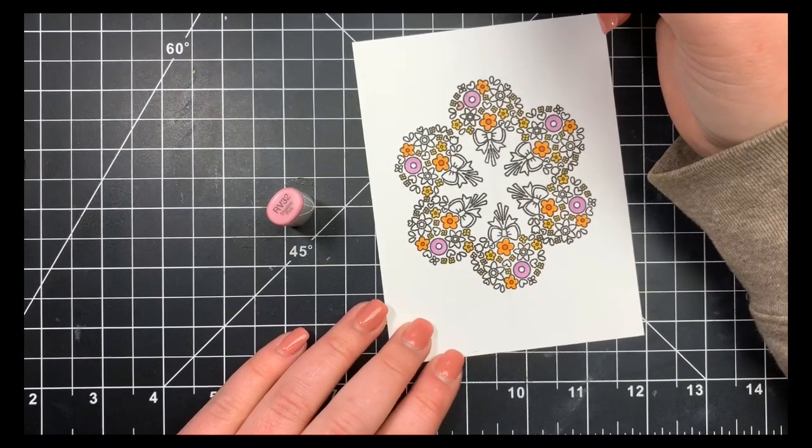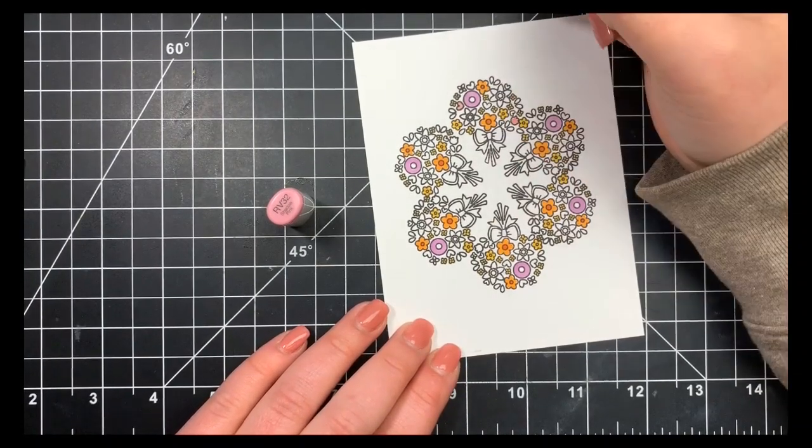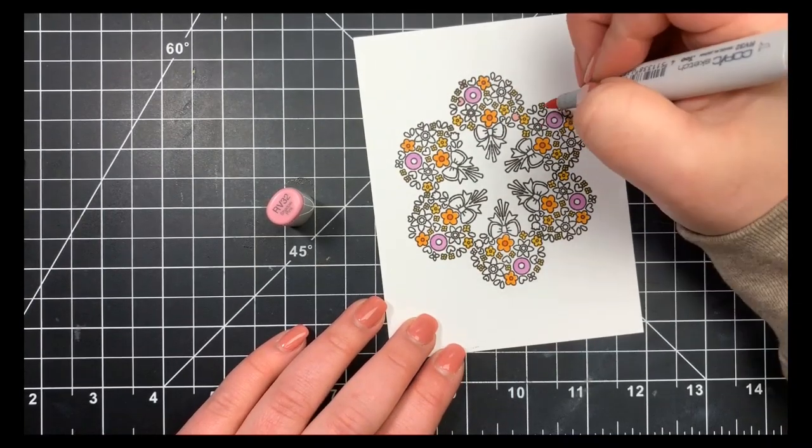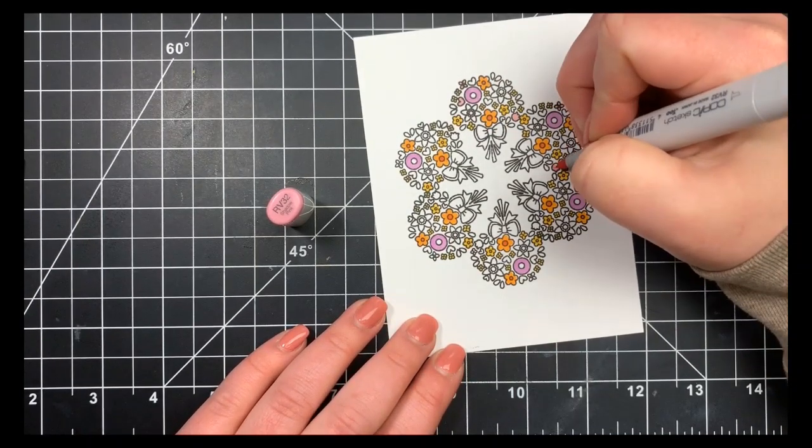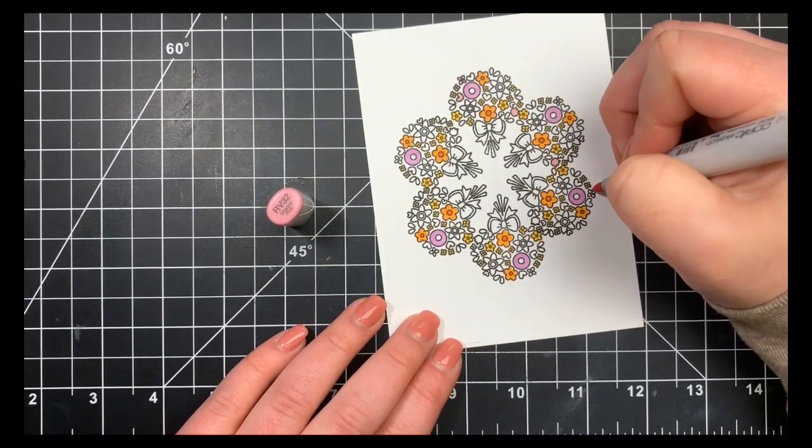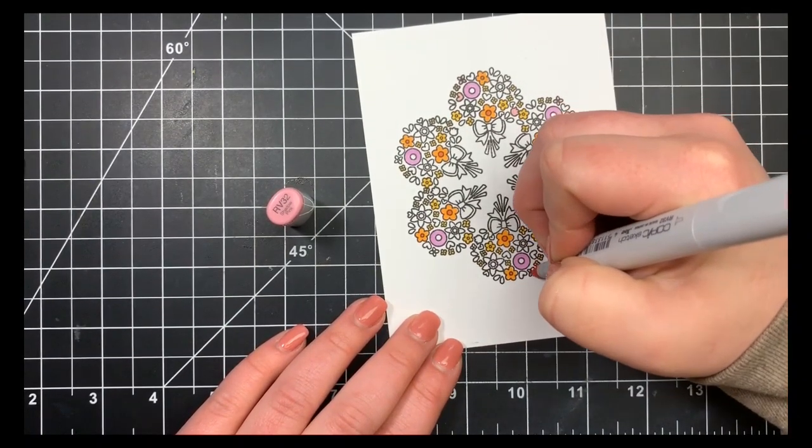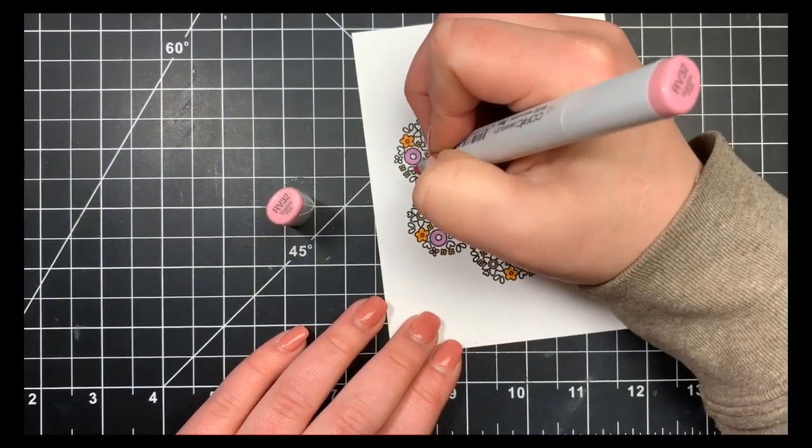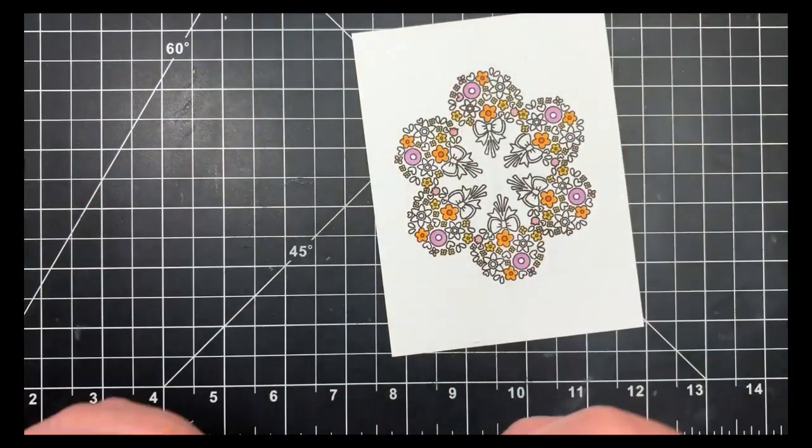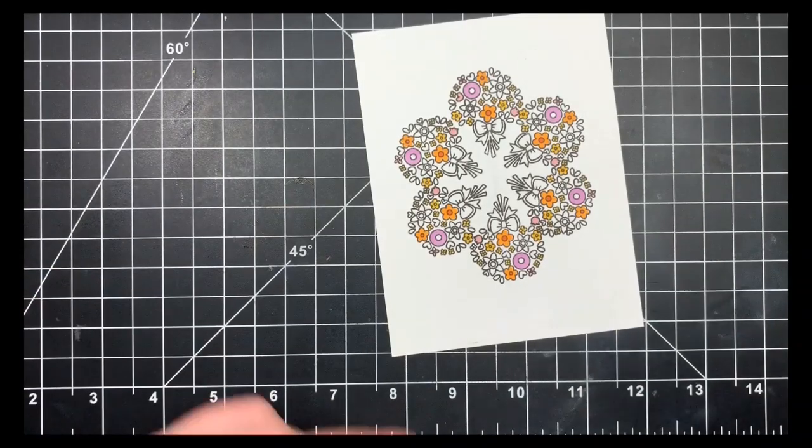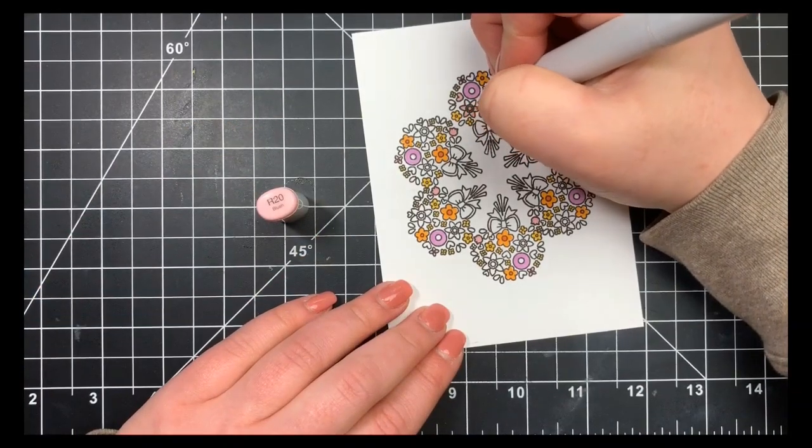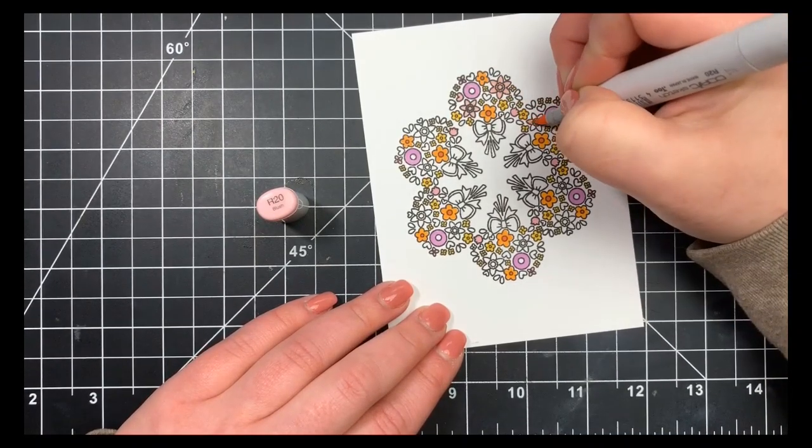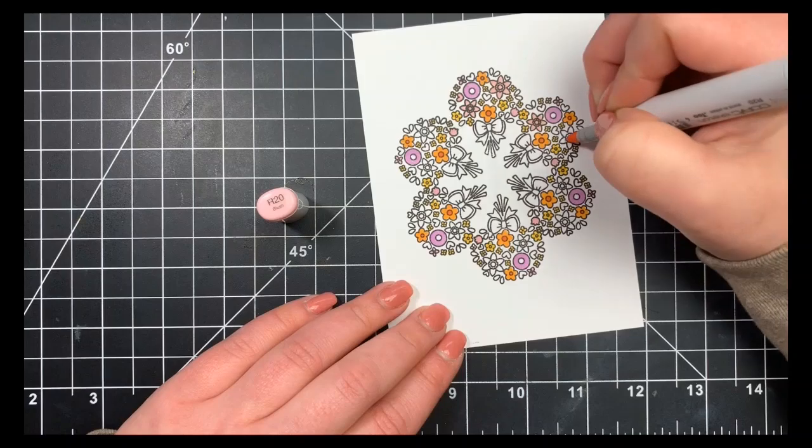I was going to color the little hearts with RV32, but it was too light. I wanted my hearts darker than my flowers. I ended up not using that for my heart, but I had already colored in one. Because Copics are transparent, if you want something darker, you can always add it directly over it, and you'll never know the difference.